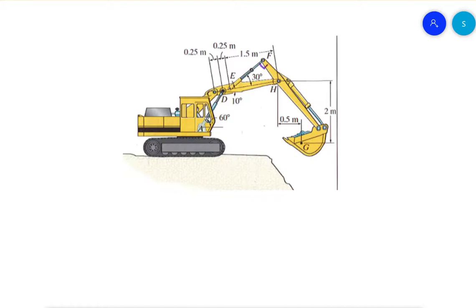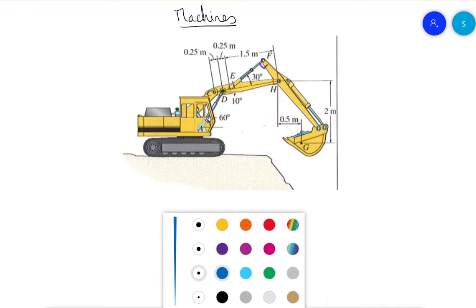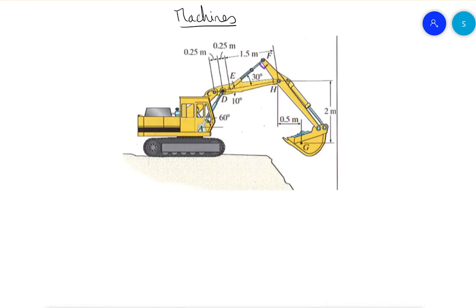This is a review problem about frames and machines — specifically a machine because the parts are made to move using pin connections. The pin connections are at F, E, D, C, H, and A.